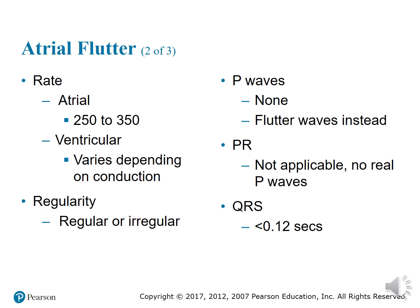Criteria for an atrial flutter are simply this. Your atrial rhythm — you have so many flutters — can be anywhere from 250 to 350 beats per minute. Ventricular rhythm depends on the conductivity and how often the AV node lets the impulse go through to the ventricles. Regularity can be either regular or irregular, depending on how many times the AV node has let impulses get through. There are no P waves due to the fact that it's beating so fast that P waves aren't forming — you just have flutter waves.